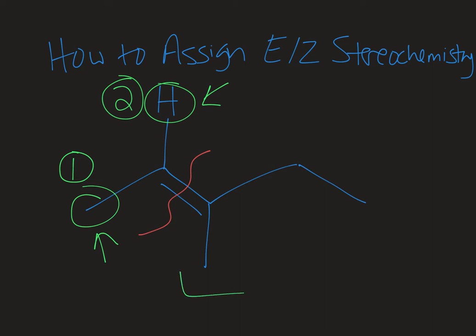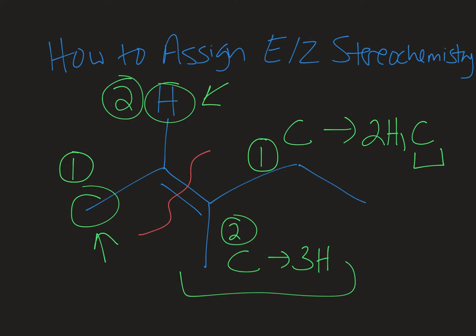If I go to the right-hand side now, here I have a carbon and a carbon so that's a tie. I'd have to look at what is attached to those carbons. The carbon on the lower side has three H's on it, it's a methyl group, and the carbon on the upper side has two H's on it and then also another carbon. So this is the tiebreaker. This carbon has a higher atomic number and so the ethyl group will get the 1 priority and the methyl group will get the 2 priority.